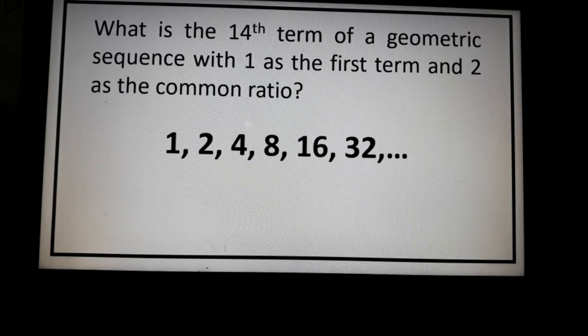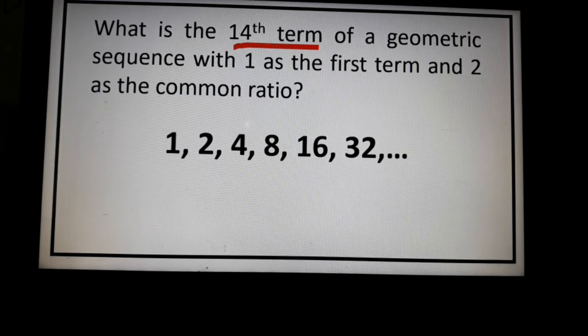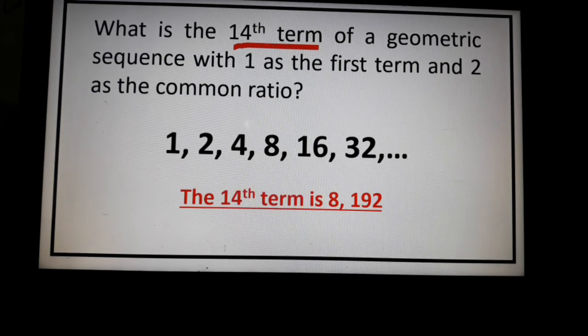So we only have derived here the first 6 terms. But in the problem, we are asked to look for the 14th term. So all you need to do is to multiply 2 repeatedly until you reach the 14th term. So this might take long. So you can use calculators or whether you solve it manually using a pen or a paper. The 14th term is given as 8,192. So you just imagine the trouble of multiplying repeatedly if you're not going to use any formula.